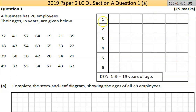You identify the key. In this case we're going up each 10, and then the unit part of each 10 can be written in these boxes here. The key is written so one vertical line — whatever that's called — and then nine represents 19 years. So one line two would be 12, two line four would be 24.